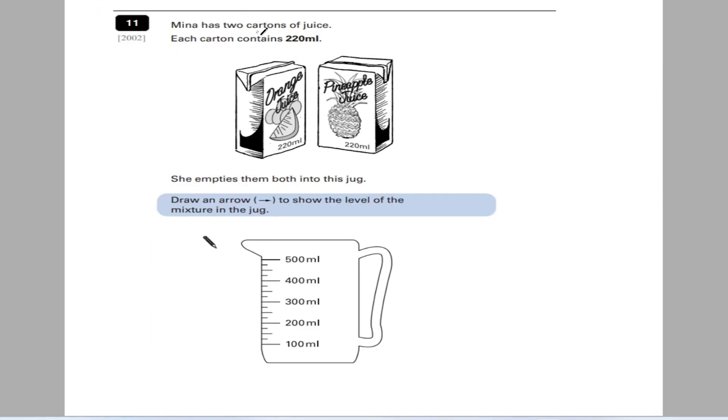This question says, Mina has two cartons of juice. Each carton contains 220 millilitres. She's got orange and she's got pineapple. She empties them both into a jug. Draw an arrow to show the level of mixture in the jug. So first of all, we know that both of them hold 220. So that's 220 times two or 220 added together. So 0, 4, 4. So all together with both cartons, it's 440 millilitres. So how am I going to show that on here? Well, now I need to work out the increments. I can see 400 here, but where's 440?